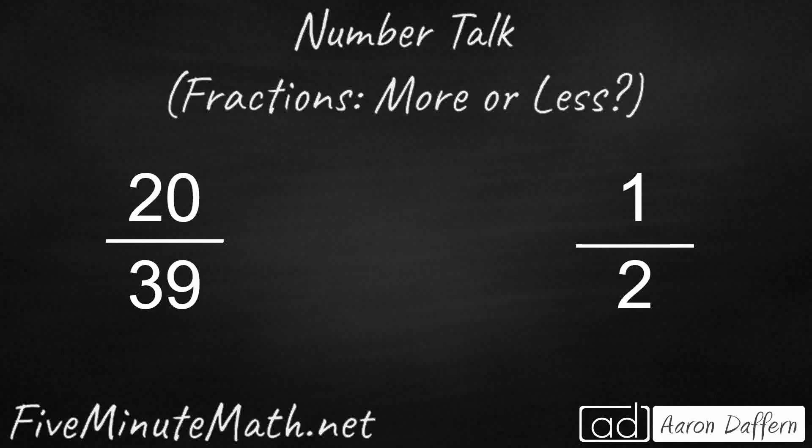Hello and welcome to 5-Minute Math. Today for our number talk, we are looking at the fraction 20 39ths and deciding whether it is more or less than 1 half. We want to use mental math, which means we don't want to use cross multiplication or convert both of these to decimals to compare. So how can we figure this out?